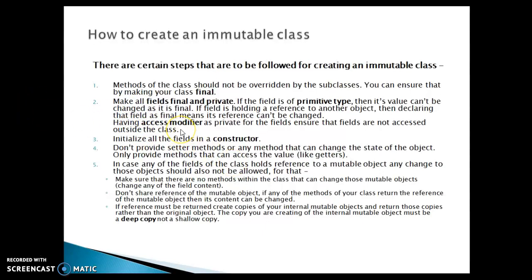The third step is to initialize all the fields in the constructor. The fourth step is to not provide any setter method or any method that can change the state of the object — only provide public getter methods. The fifth step: in case any of the fields of the class holds a reference to a mutable object, any change to those objects should also not be allowed. Make sure that there are no methods within the class that can change those mutable objects, meaning no method can change any field's content.